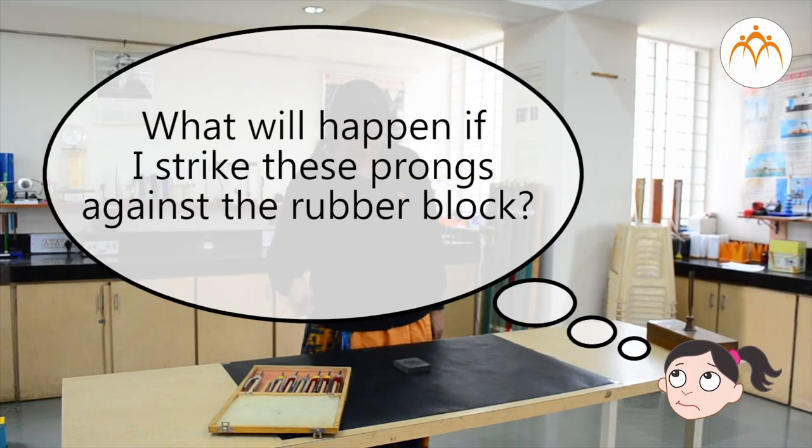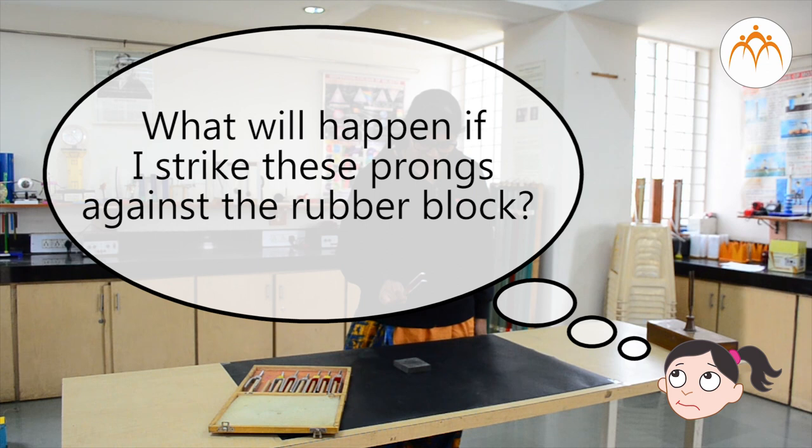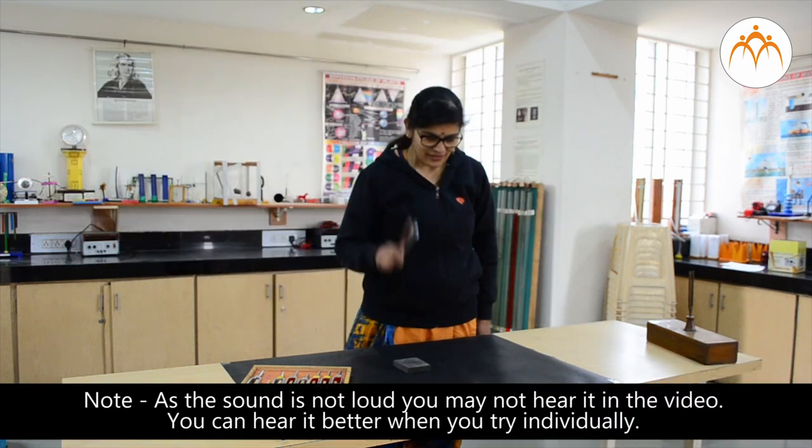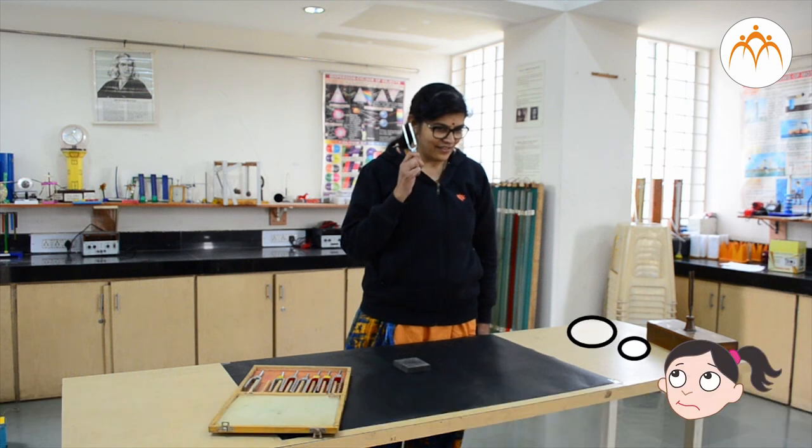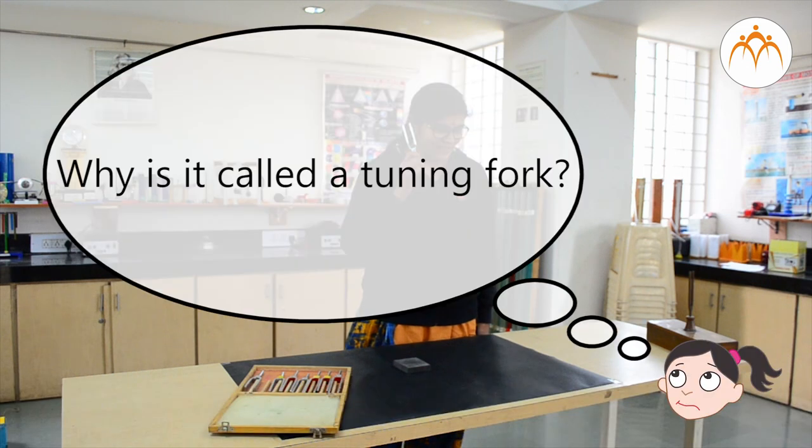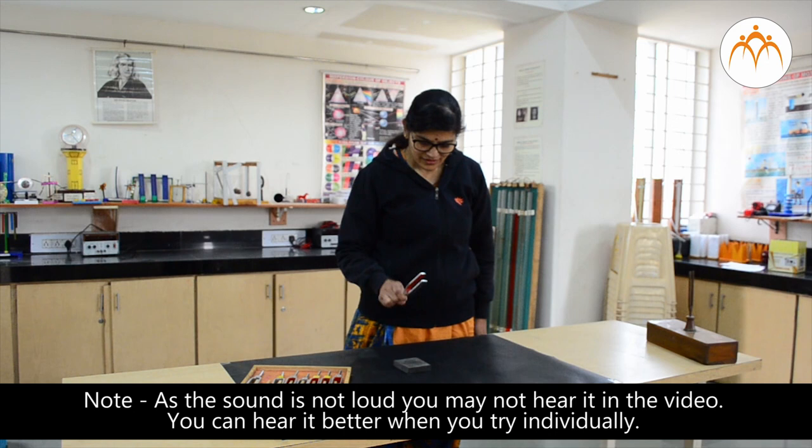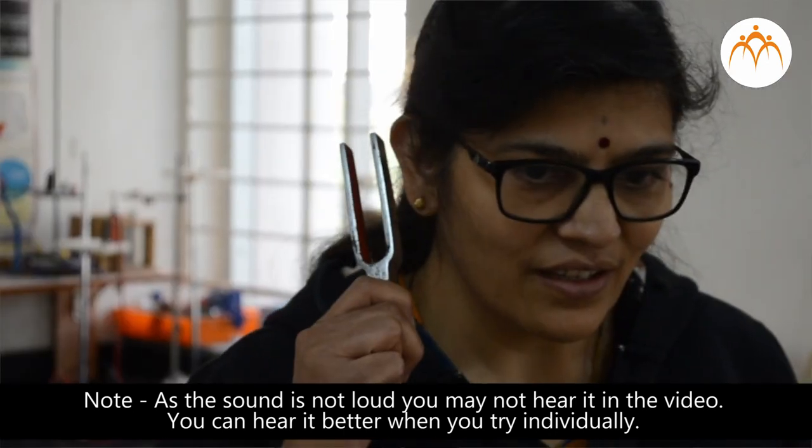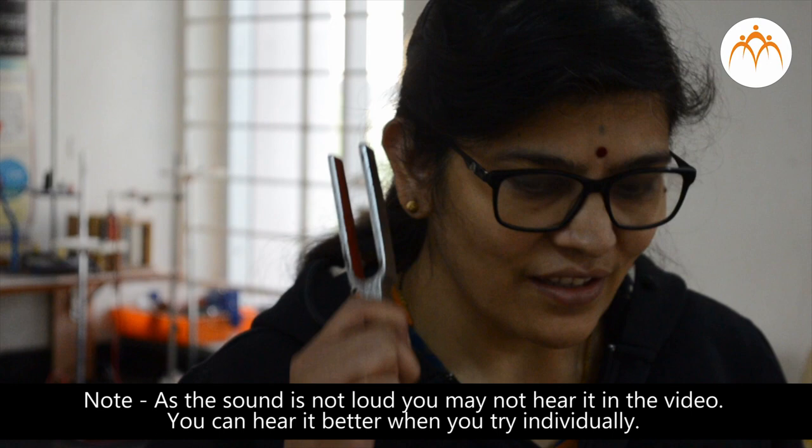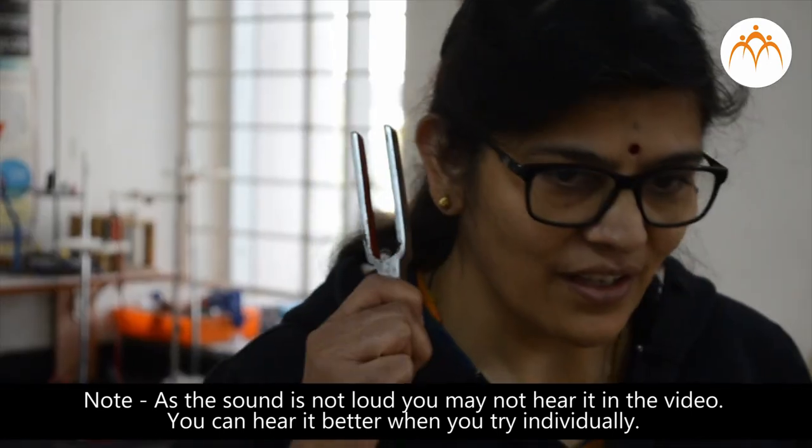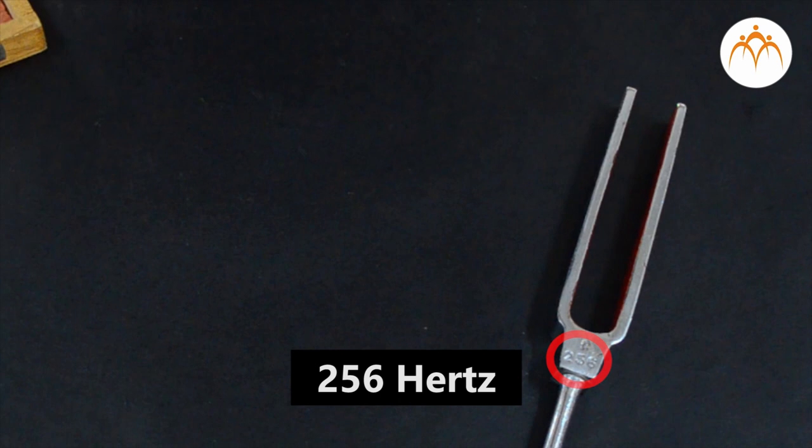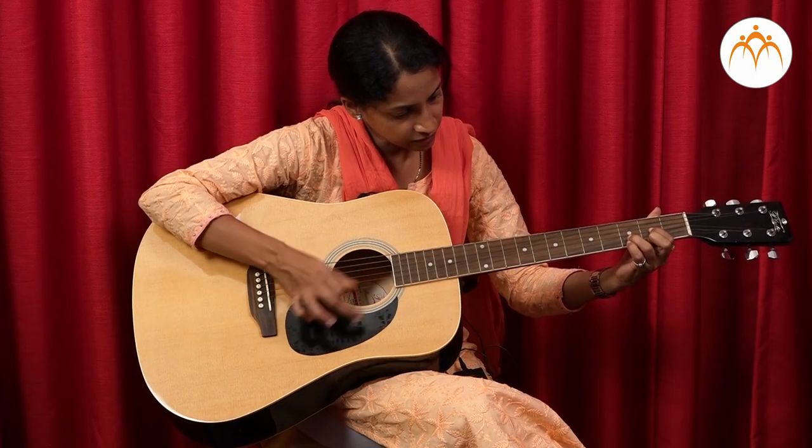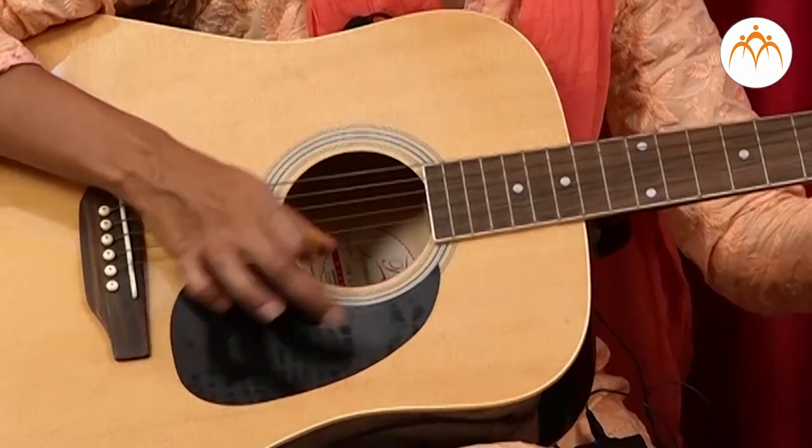What will happen if I strike these prongs against this hard rubber block? These will vibrate just like the metal strip we saw earlier. Why is it called a tuning fork? When the tuning fork vibrates, it generates sound. Each tuning fork generates a unique sound. The number on the fork indicates the frequency of sound it generates. These can be used to tune musical instruments.